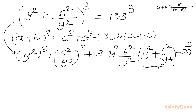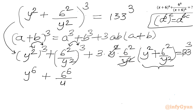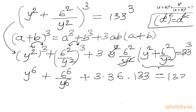Now here I will substitute 133 for the bracket (y² + 6²/y²). The y² terms cancel in the middle product. Using the exponent property a^b whole power c = a^(b×c): (y²)³ becomes y^6, and (6²/y²)³ becomes 6^6/y^6. The middle term becomes 3 times 36 times 133, which is 3×36 = 108, so plus 108 times 133. Right-hand side is 133³.